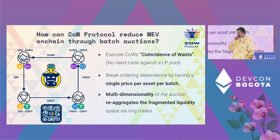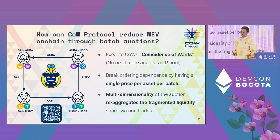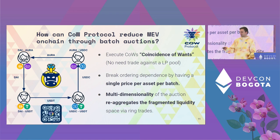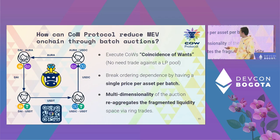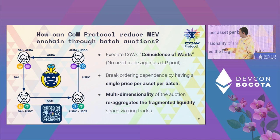For example, in a batch with four different users we can have a Coincidence of Wants and a ring trade, where the four users are trading four different tokens all in the same batch without touching an AMM, because each user is providing the liquidity needed for the other in a circle. For instance, one user selling DAI goes to the one trying to buy USDT, and so on, completing the circle with USDC against AURA.